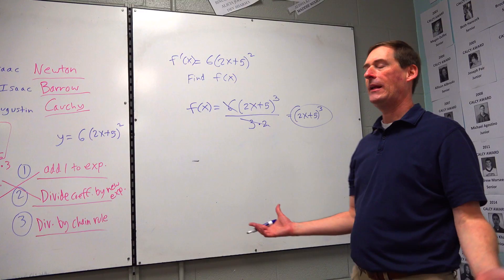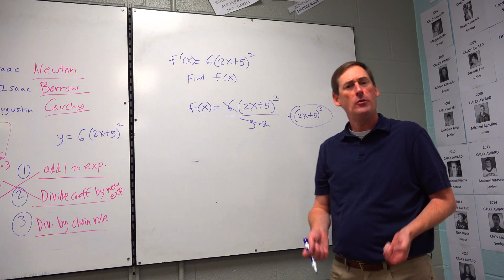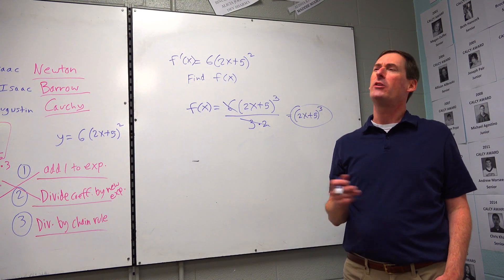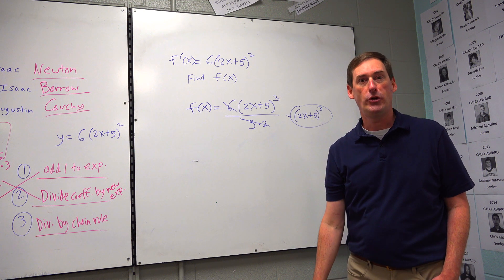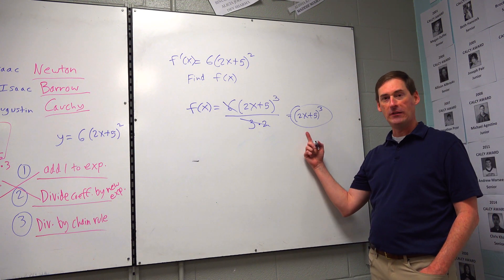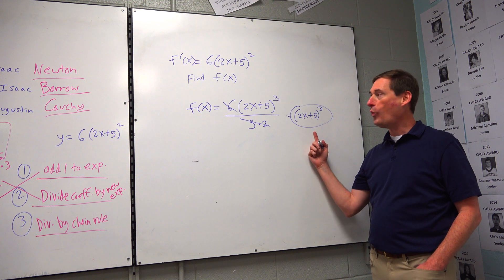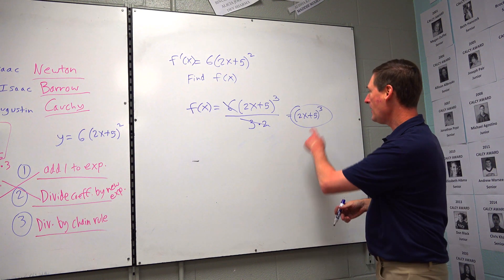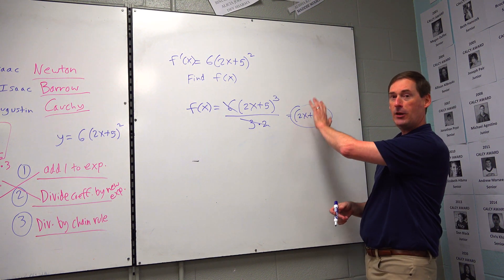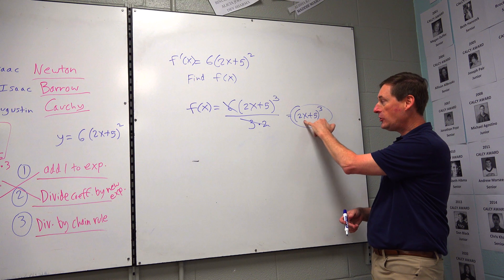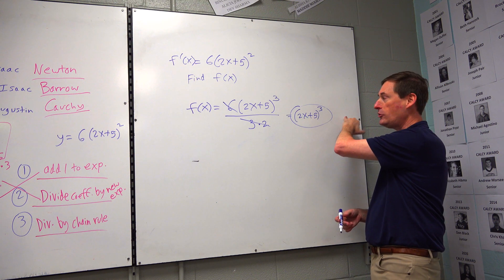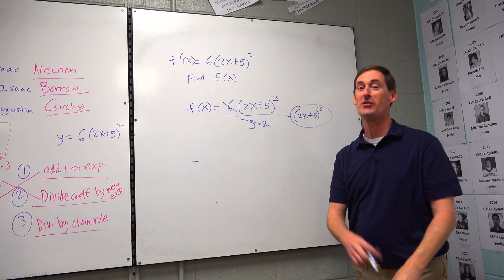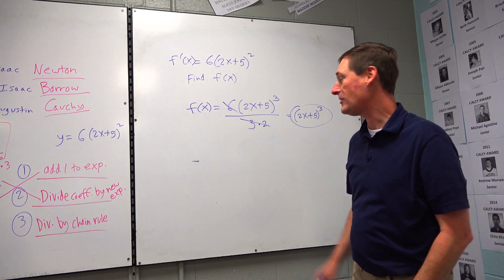You can always check your answer on these problems: take the derivative of your anti-derivative answer and it should return you to the original question. Derivative of (2x + 5)³ — bring the 3 to the front, base stays, power drops to 2, chain rule times 2 — gives 3 · 2 · (2x + 5)² = 6(2x + 5)². It works.